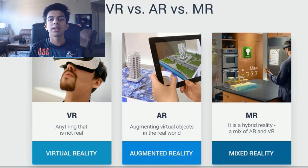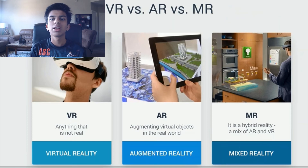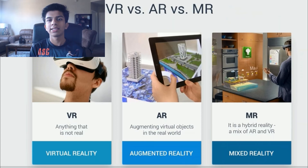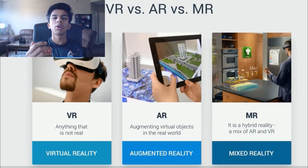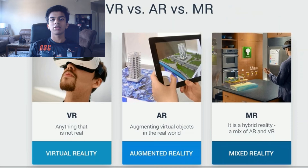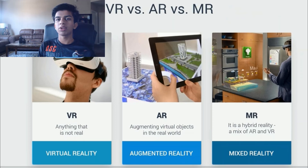Augmented reality shows you something virtually positioned in the real world. The display you're using shows you the physical world around you with virtual stuff added in. For example, you can use the camera interface to show you which direction to head in, or you can use a headset to play games — such as a robot crashing from a wall and attacking you, and you can shoot the robot with your fingers.